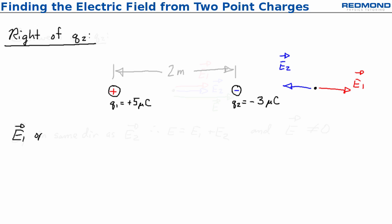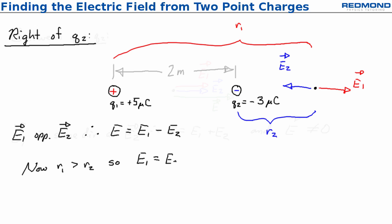Although Q1 is still greater than Q2, R1 is also greater than R2, so it's possible for both the numerator and the denominator in E equals KQ over R squared to be bigger for E1 than E2. Every point right of Q2 is closer to the weaker charge, and if we find exactly the right point, we can figure out where they'll balance out.